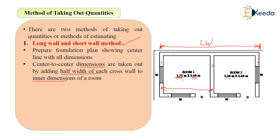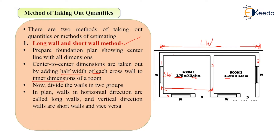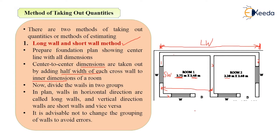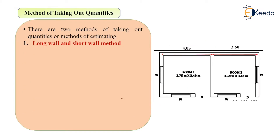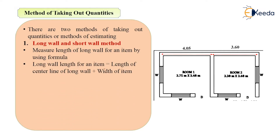In the plan, horizontal walls are called long walls and vertical walls are called short walls, and vice versa. There will be two long walls and three short walls in this particular plan. It is advisable not to change the grouping of walls to avoid errors — from start to end, you must use the same grouping in all calculations. Then measure the length of the long wall for an item using the formula.